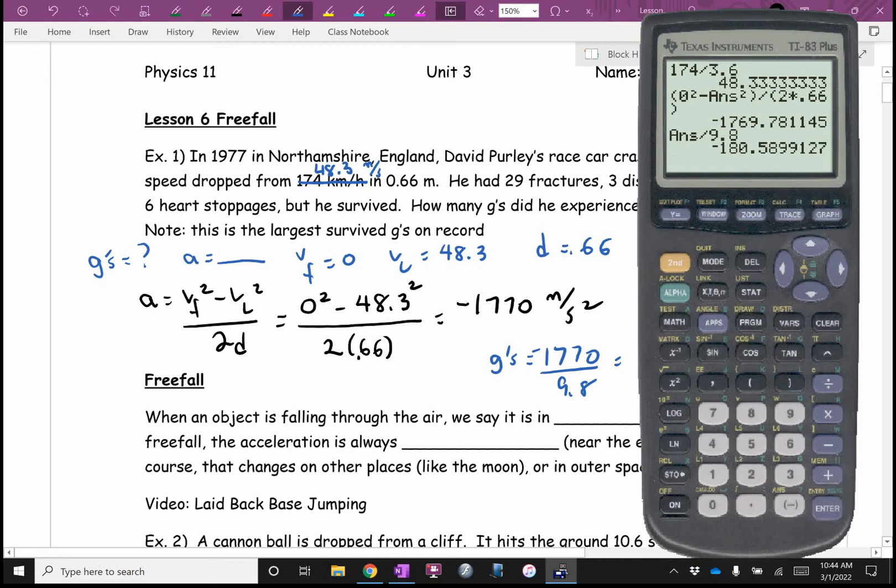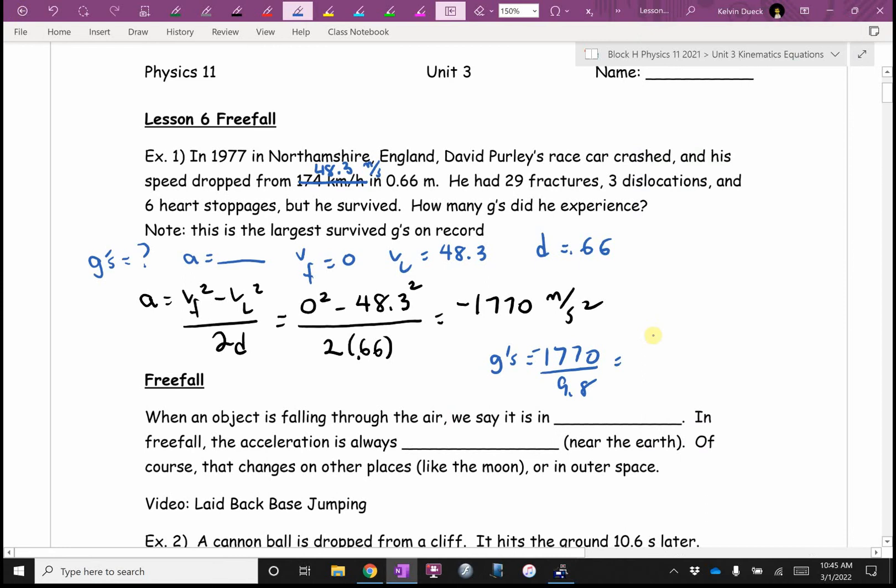And then, Jada, how do I convert acceleration into G's? I'm going to divide my answer button by 9.8. Biggest on record, this person survived 180.6 G's.